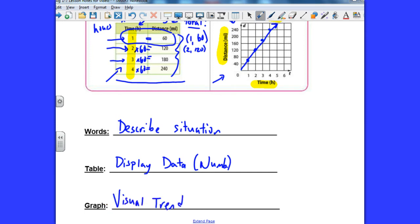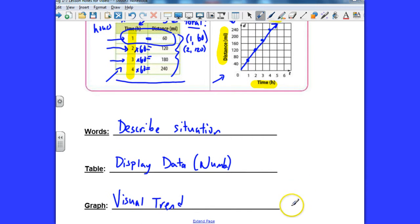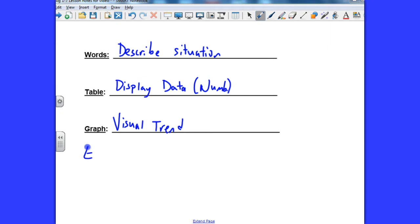The graph shows basically a visual trend where we can look at the graph, and we can easily see that every hour they're going the same distance on average as they continue. Now, I left one word off, equation. I wish I would have put that on there, but we can actually add equation here. The equation is used to figure values of y based on x.